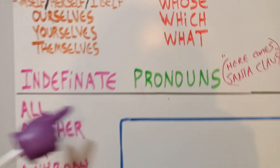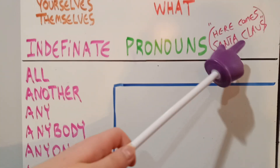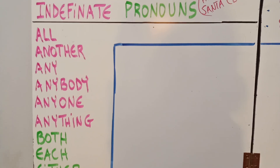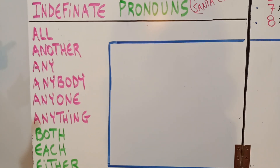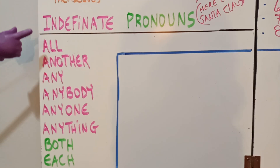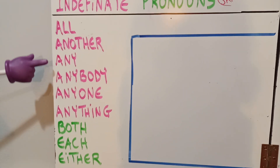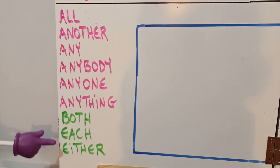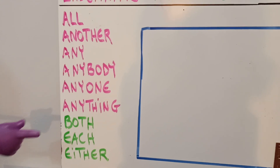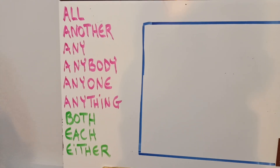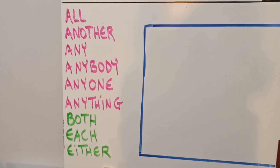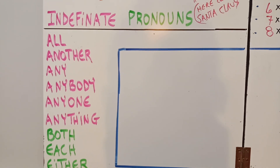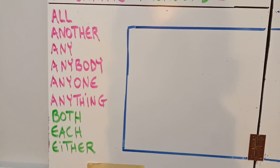For English, we're going to do the indefinite pronouns to the song of 'Here Comes Santa Claus.' We're just going to go all the way down to 'either,' but the whole song will go for the next weeks 11, 12, and 13. These are the indefinite pronouns: all, another, any, anybody, anyone, anything. Both, each, either, everybody, everyone, everything. Few, many, more, most, neither, nobody, none, one, other, several. Some, somebody, someone, such. These are the indefinite pronouns. But this week, we just stop at either.